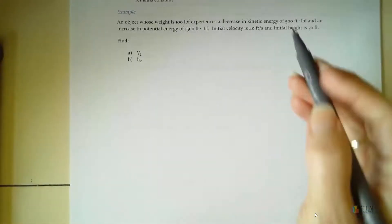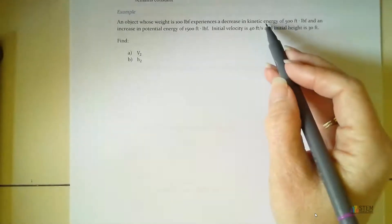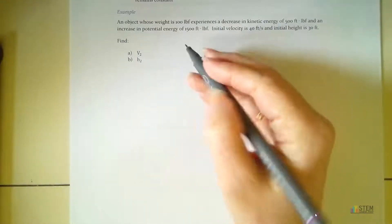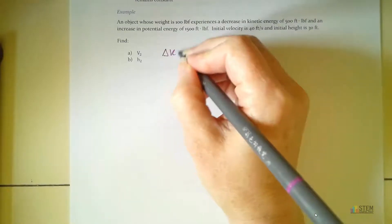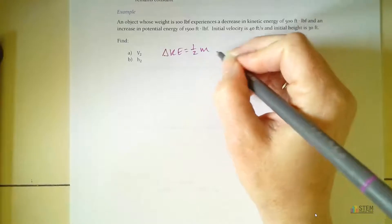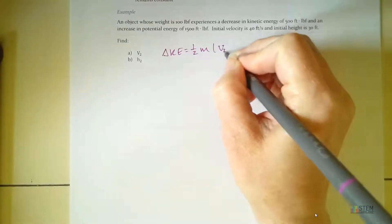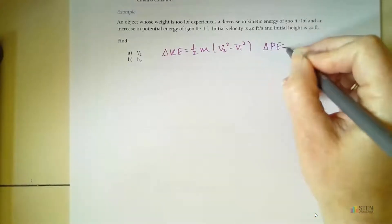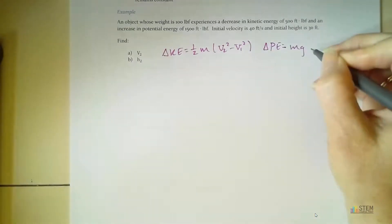All right, so since we have kinetic energy and potential energy given to us, we're probably going to need to use our two equations for those things. So let's write those down. So we've got one-half m v2 squared minus v1 squared, and then for potential energy, we're going to have the weight mg times h2 minus h1.